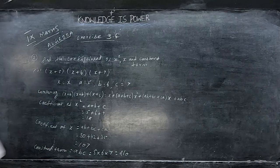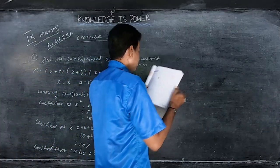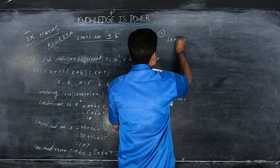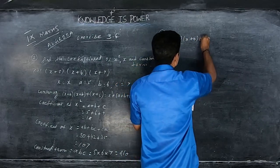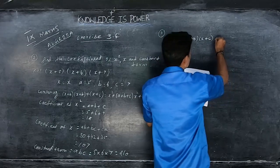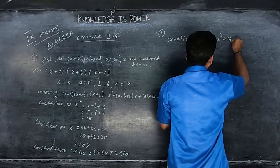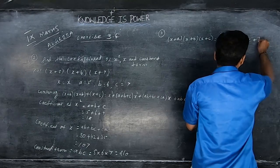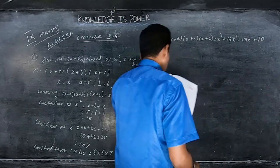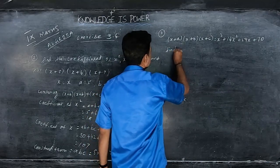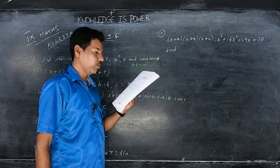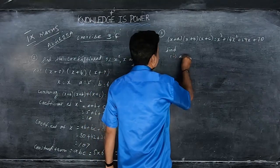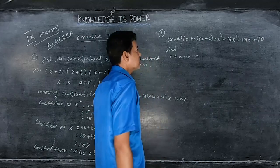Now we move to question number 3. They have given: (x+a)(x+b)(x+c) = x cube + 14x square + 59x + 70. There are 4 sub-questions — Roman numerals 1, 2, 3, and 4 — we will do them one by one. First: find a+b+c.